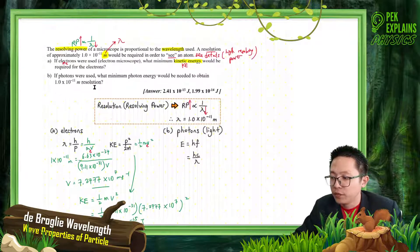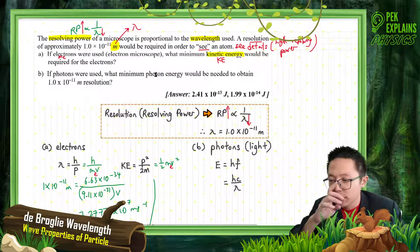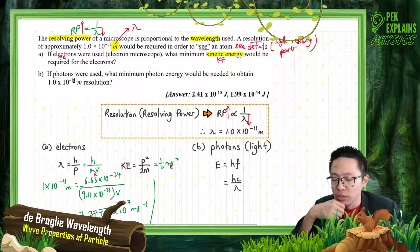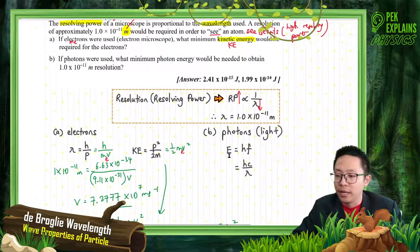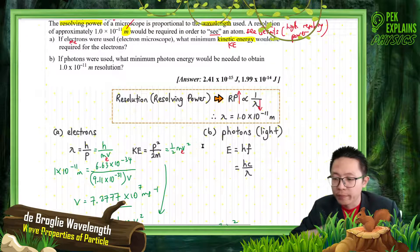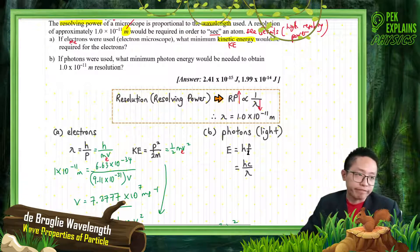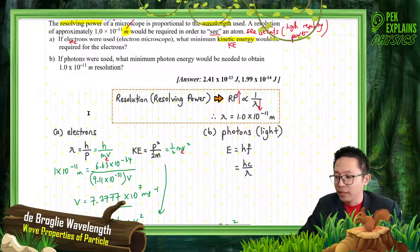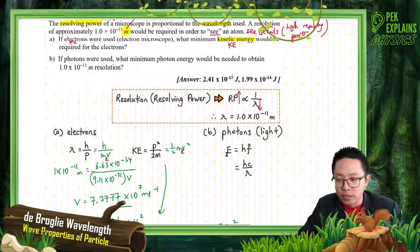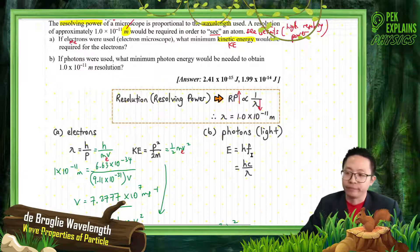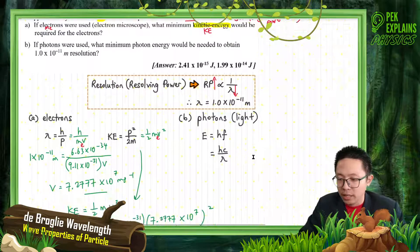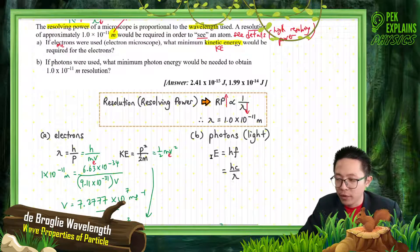Next question: if photons were used, what is the minimum photon energy needed to obtain this resolution? If you use photons — remember — if electrons, we use half mv². If photons, we use hf. If electrons, it has kinetic energy. If photons — light — it has quantum energy. One quantum of light is hf, or hc over lambda.